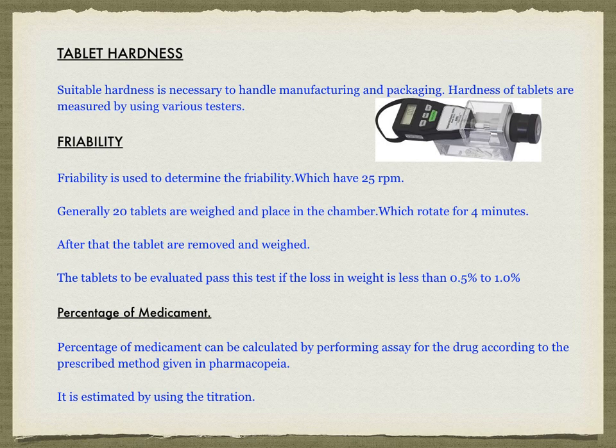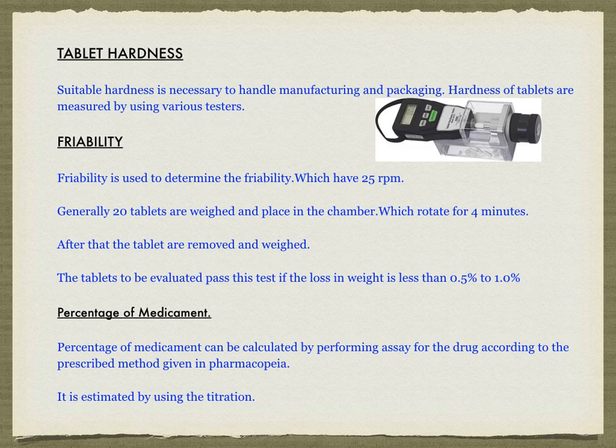Friability testing is used to determine the friability of tablets, with the apparatus rotating at 25 RPM. Generally, 20 tablets are weighed and placed in the chamber which rotates for 4 minutes. After rotation, the tablets are removed and weighed. Tablets pass this test if the loss in weight is less than 0.5%.